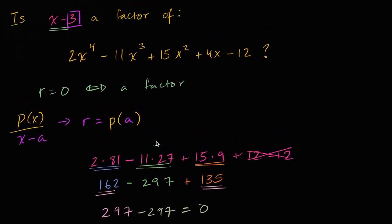So the remainder, when I divide this polynomial by (x minus 3), is equal to zero. So x minus three is indeed a factor of this polynomial.